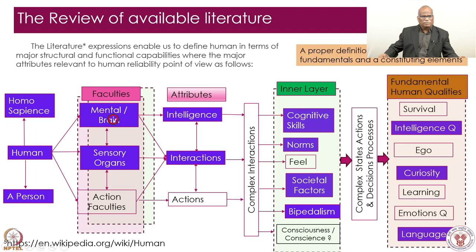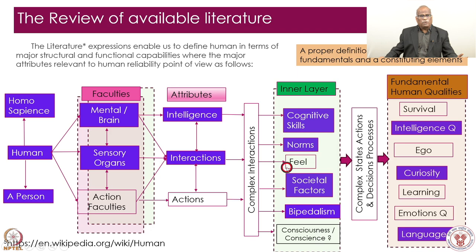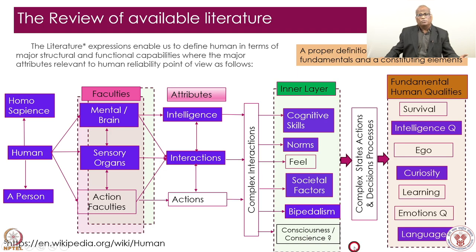From these sources we gather: Homo sapiens, person, mental faculty, brain — with direct or indirect references. In THERP, sensory organs have been explicitly considered, and there is also a cognitive part and an action part in some human reliability methodologies. We get intelligence and complex interactions. The inner layer is cognitive skills, then norms, procedures, and rules. Social factors appeared, as did bipedalism.